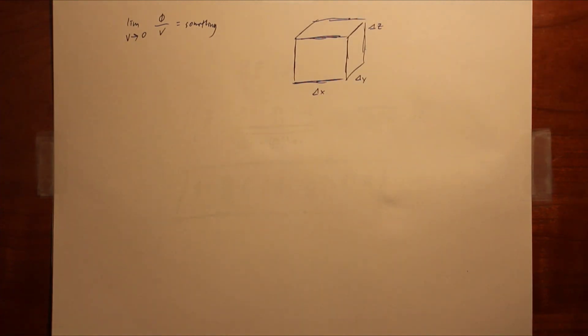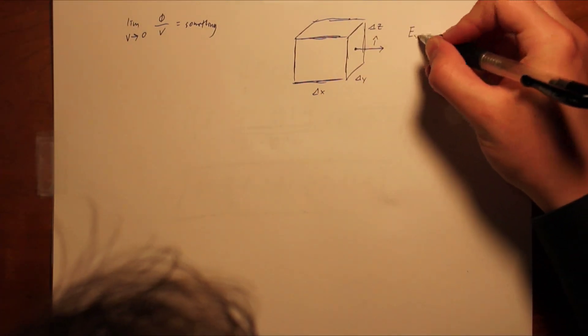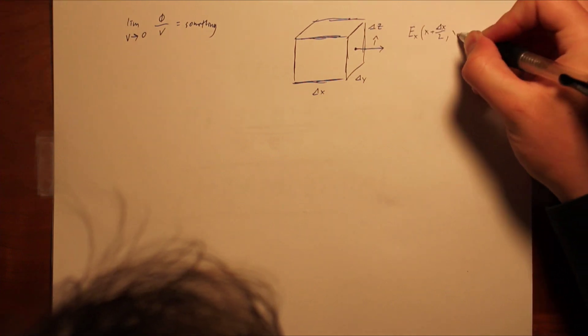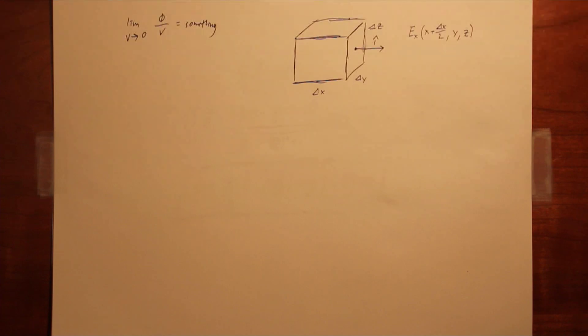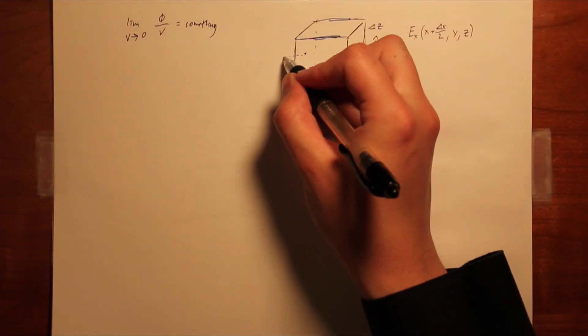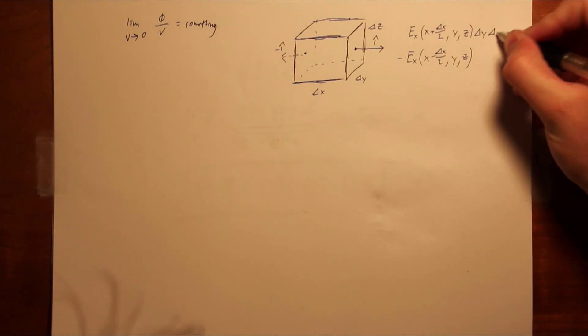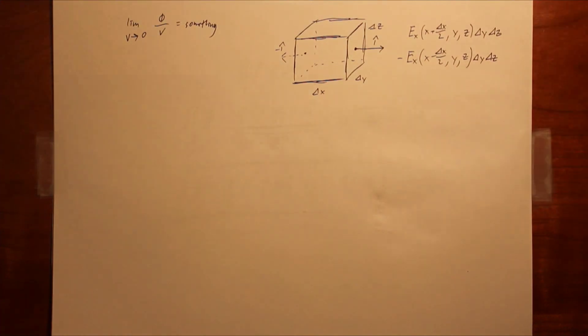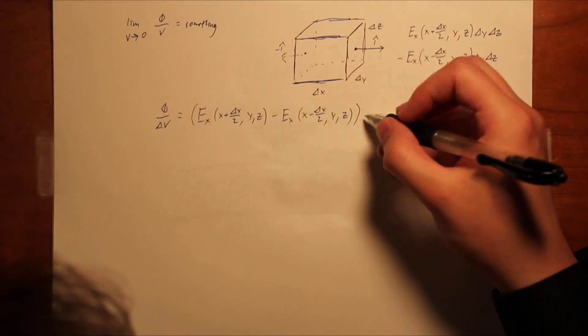Consider a y, z face, whose normal vector must then be i hat. We can approximate the field of that face as the field of the center of the face at x plus delta x over 2, y, z. The component of the y, z face is then e sub x of x plus delta x over 2, y, z, where the sub x denotes the x or i component of e. And the flux is then that quantity times delta y delta z. Correspondingly through the opposite face, the normal is negative i hat, and we can find that flux as well. By symmetry, we can apply the same reasoning to all the other sides and find the total flux.